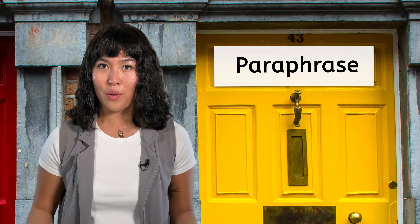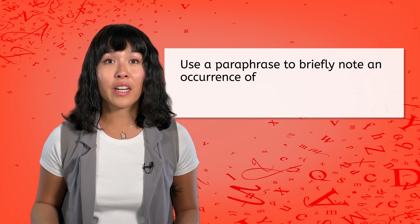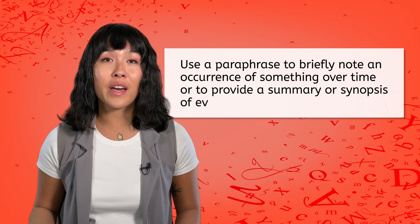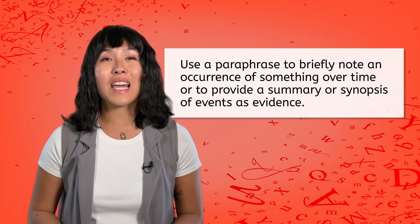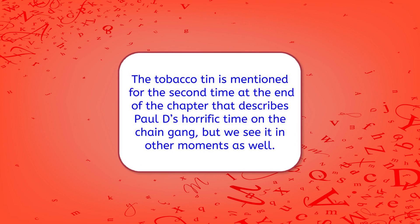Finally, we'll talk about when to use a paraphrase as evidence instead of a quote. You'll want to use a paraphrase to briefly note something that happens over time, like an image that occurs throughout a novel, or when you want to provide evidence of an overall plot point, series of events, or a synopsis. In short, you'll use a paraphrase when you aren't looking closely at the language of a text. For example: 'The tobacco tin is mentioned for the second time at the end of the chapter that describes Paul D's horrific time on the chain gang, but we see it in other moments as well.' While this isn't a direct quote, it's still evidence because it's a statement of fact about what happened in the novel — irrefutable.